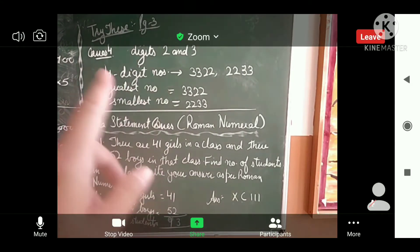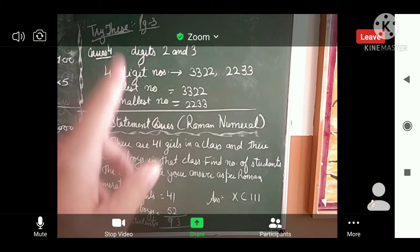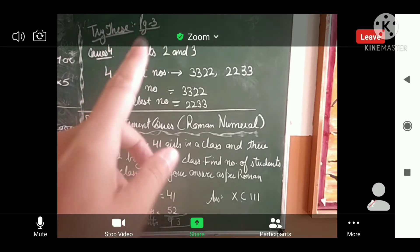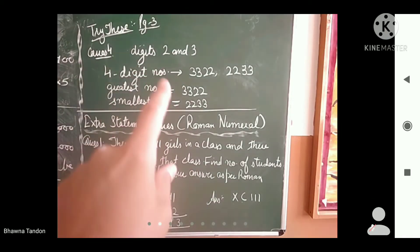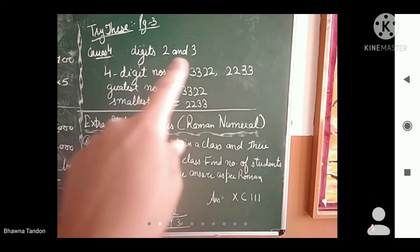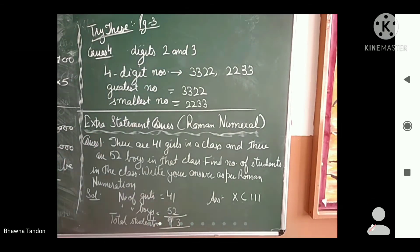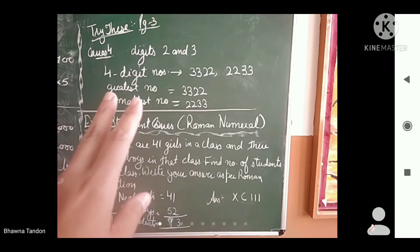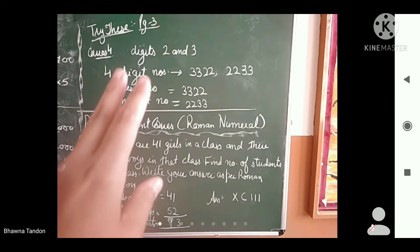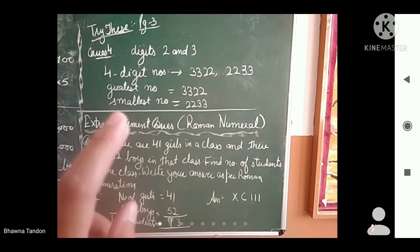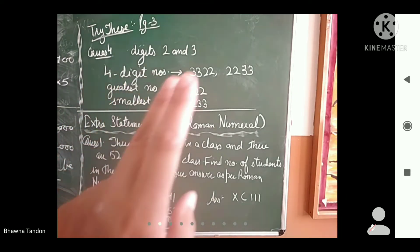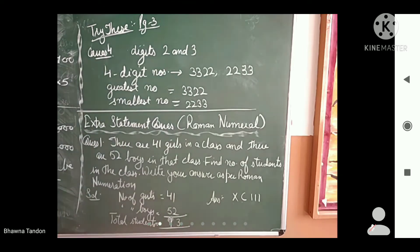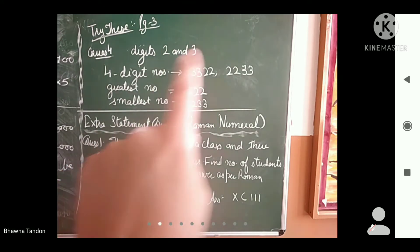Here is question number 4 of page 3 try these. We are given 2 digits, 2 and 3, and we have to form 4-digit numbers.